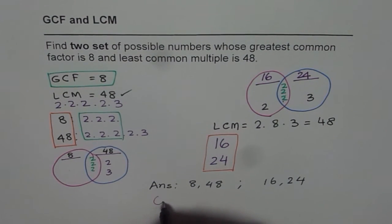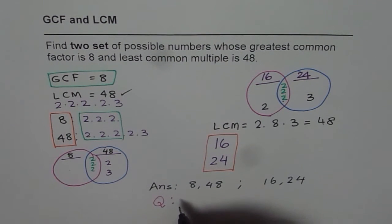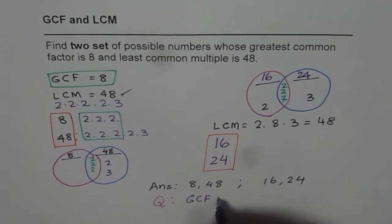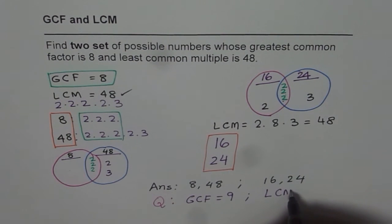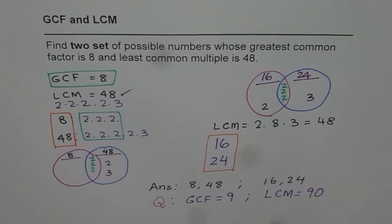Now here is a question for you. Let me change the greatest common factor — instead of 8, let me write this as 9, and least common multiple is 90. For this condition, try to find two possible sets of numbers. You know one is 9 and 90 — find the other one. That is tricky! I hope you understand and appreciate it. Thank you and all the best.